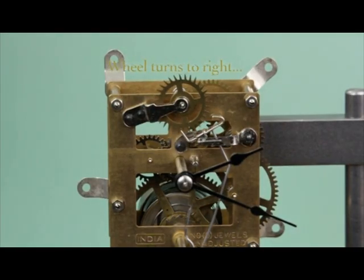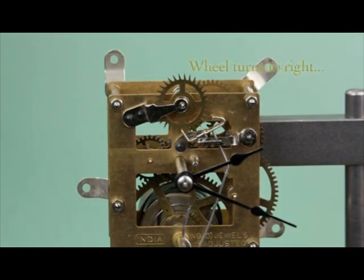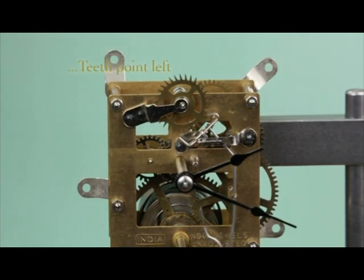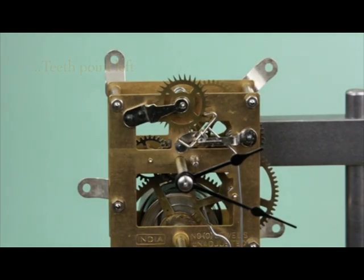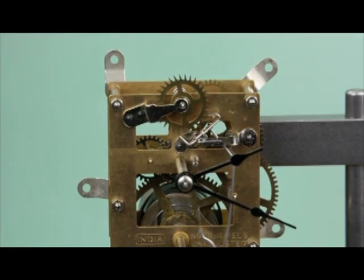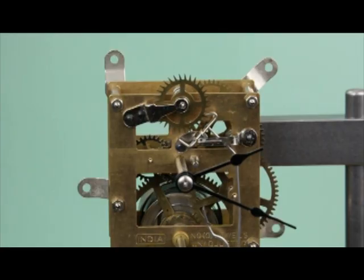If the escape wheel turns clockwise or towards the right, the angle of the escape wheel teeth will point in the counterclockwise direction or to the left. Notice how the escape wheel moves forward and then momentarily reverses direction before moving forward again. This momentary reversal is the recoil.